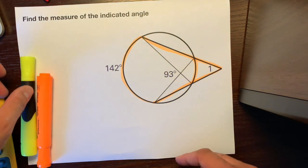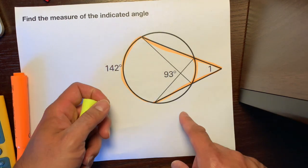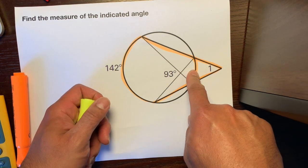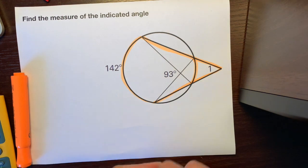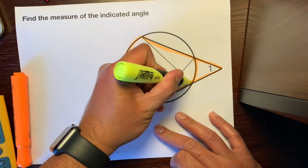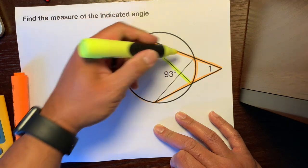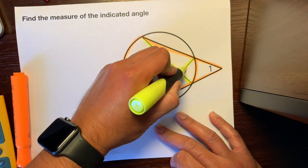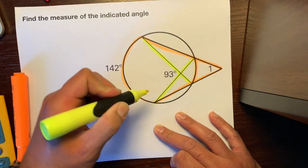However, we need to figure out what this arc is. So we have some other lines that will help us do that. So I'm going to highlight this line, this chord, and this chord right here.